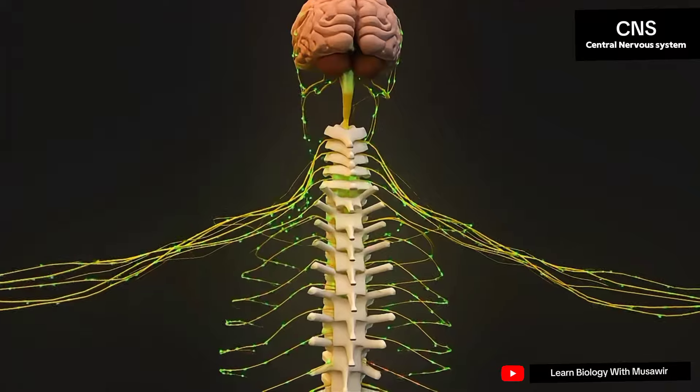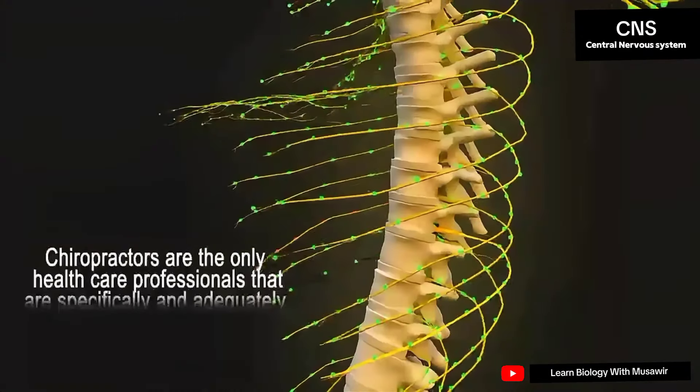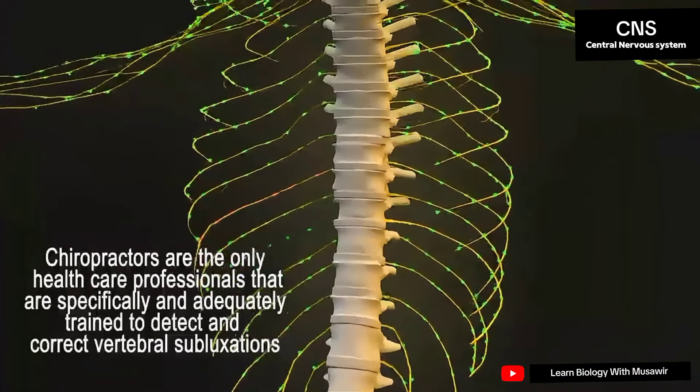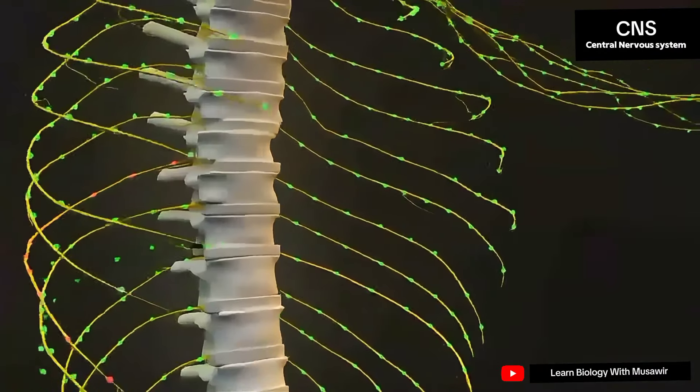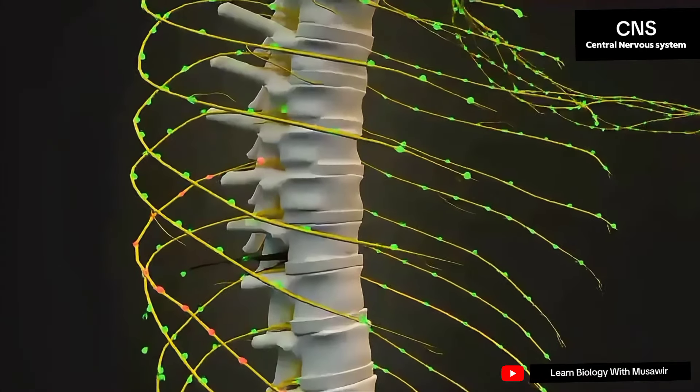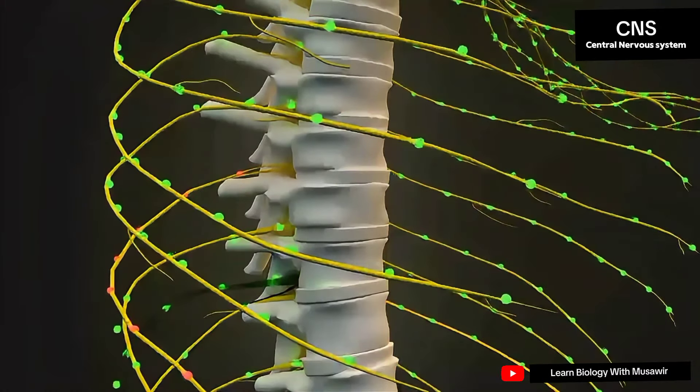Fortunately, chiropractic can help. In fact, chiropractors are the only healthcare professionals that are specifically and adequately trained to detect and correct vertebral subluxations. And through a series of precise chiropractic adjustments, your chiropractor will restore your spine's proper alignment, remove nerve interference, and return your body to its optimal health.